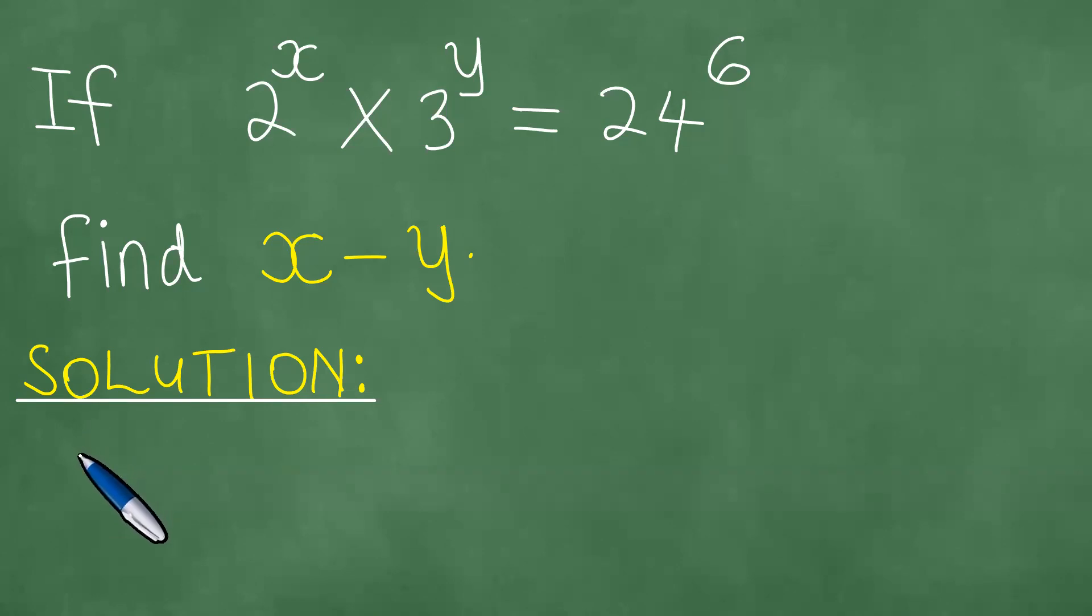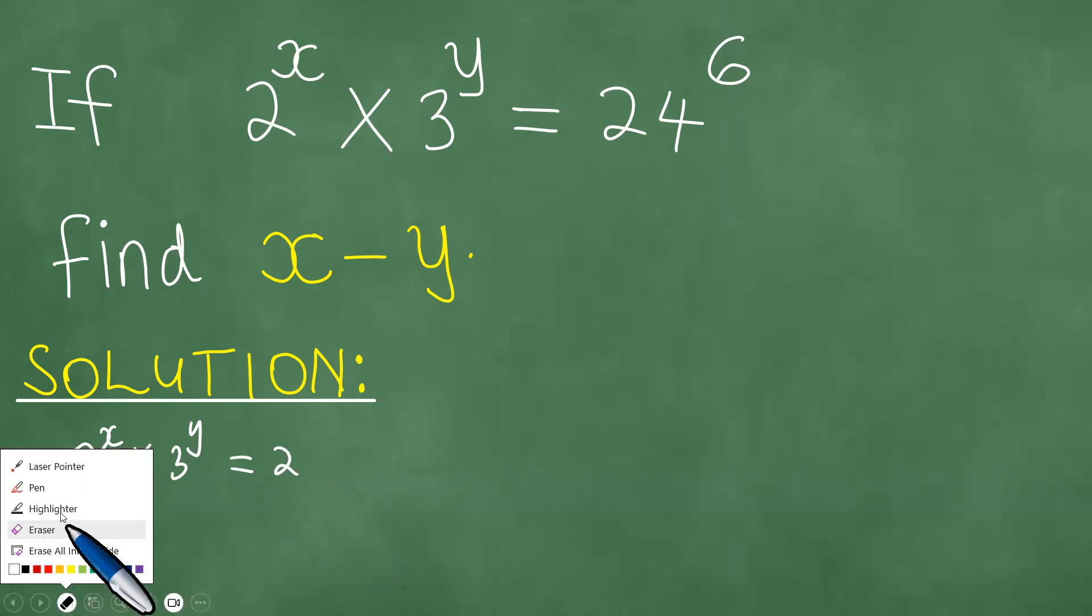So what have we been given? We have been given 2 to the power x times 3 to the power y, and this equals 24 to the power 6.